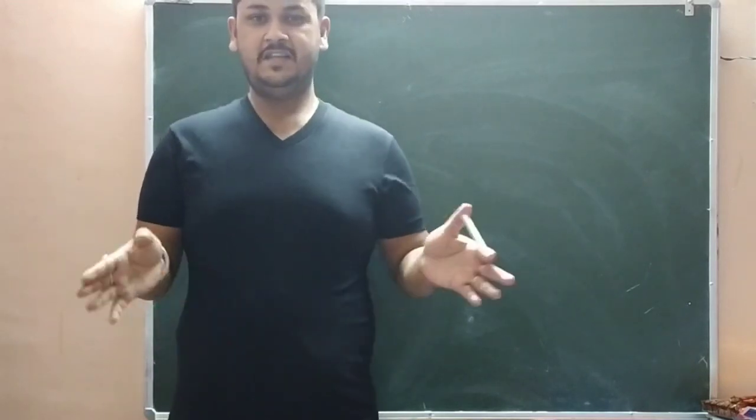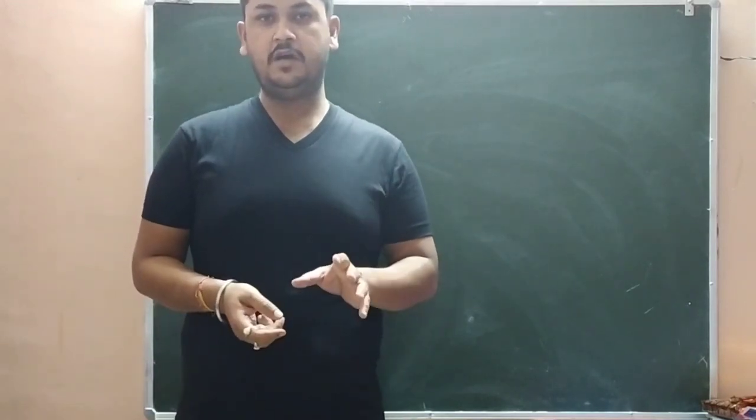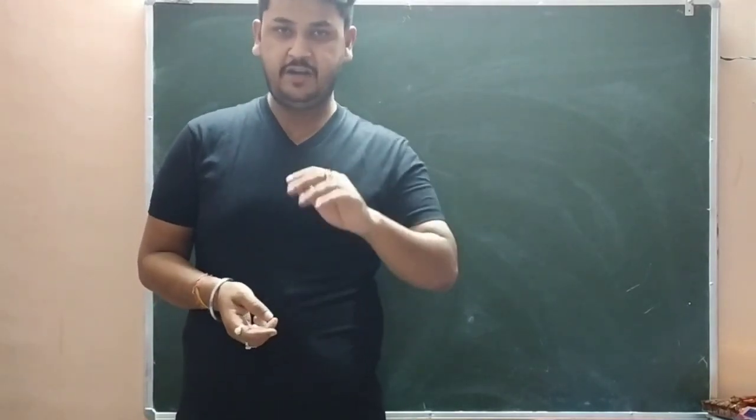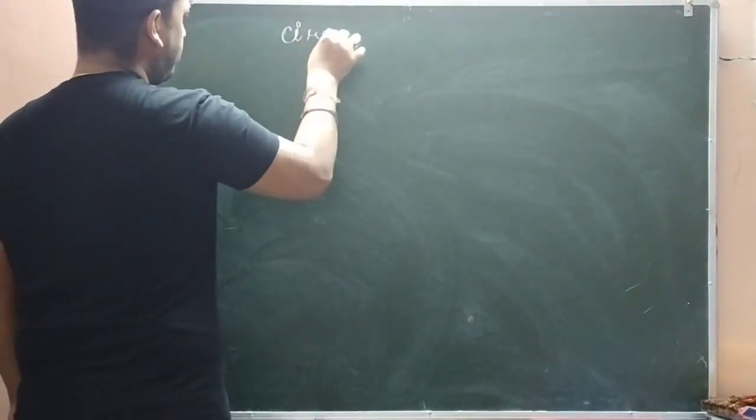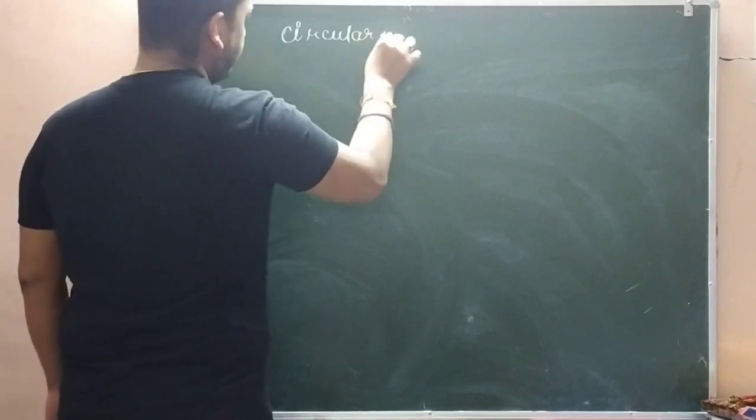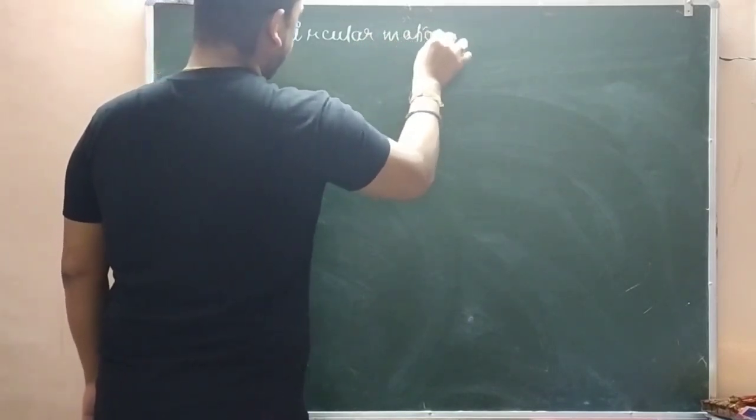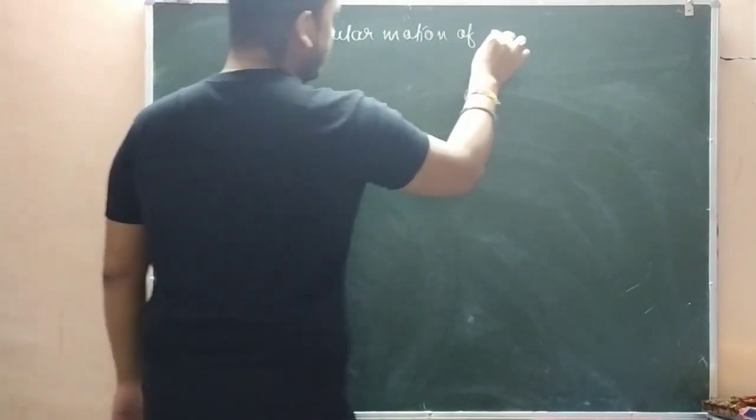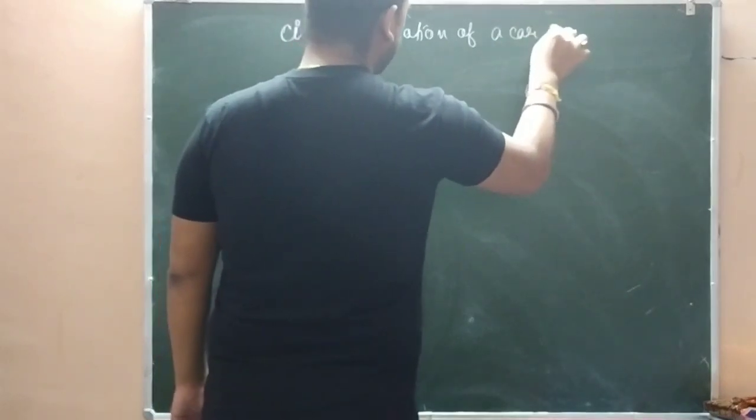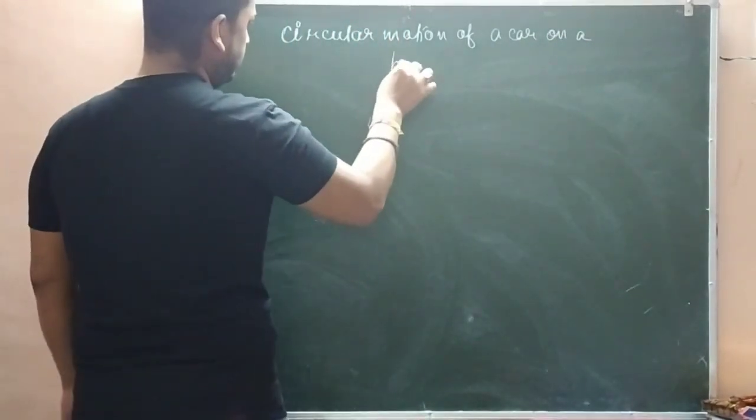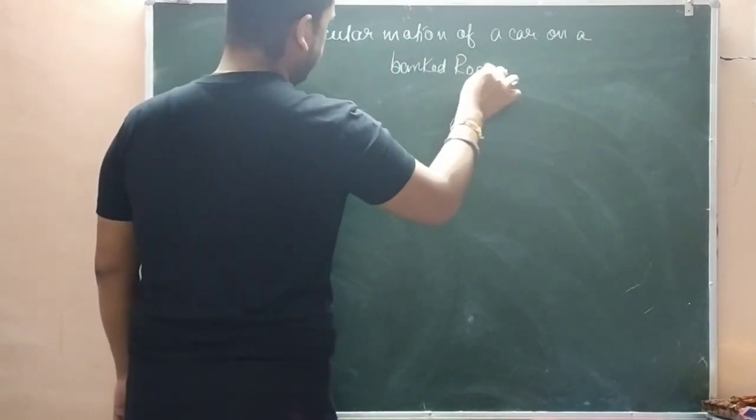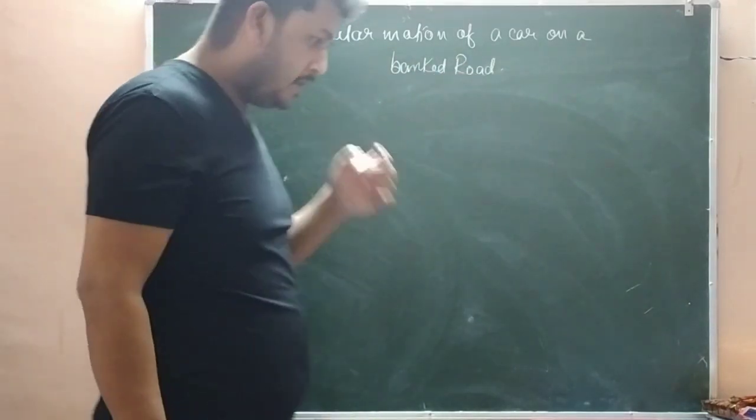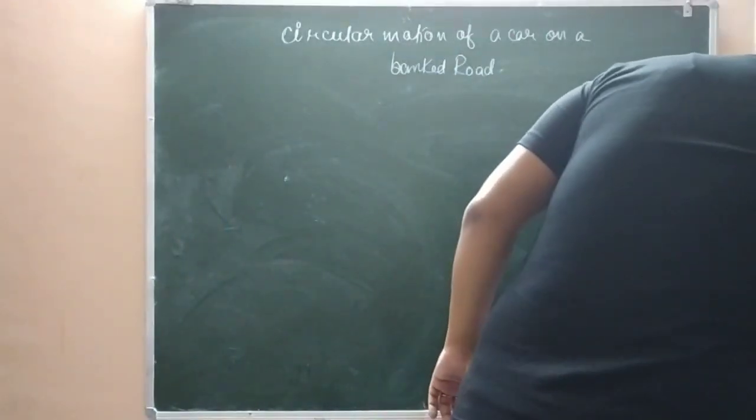Hello students, so in the last video we have seen circular motion of a car on a level road. Now today we are going to see circular motion of a car on a banked road.